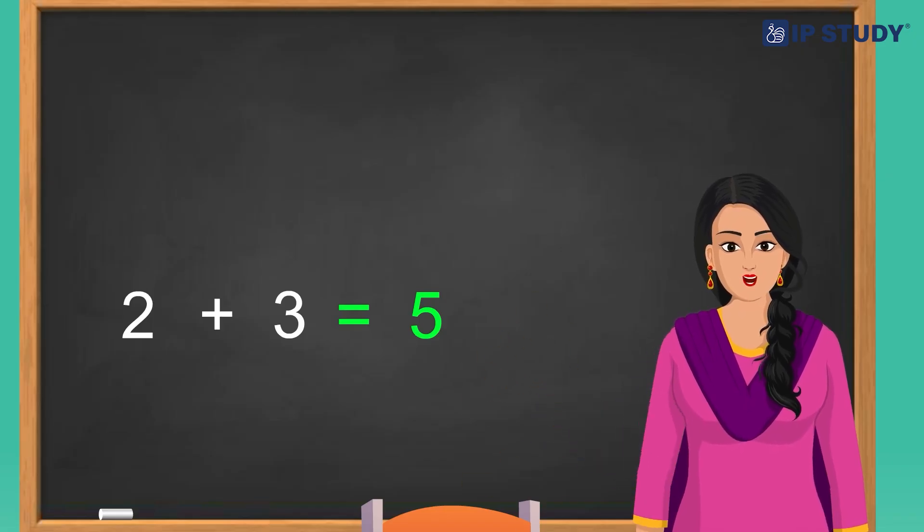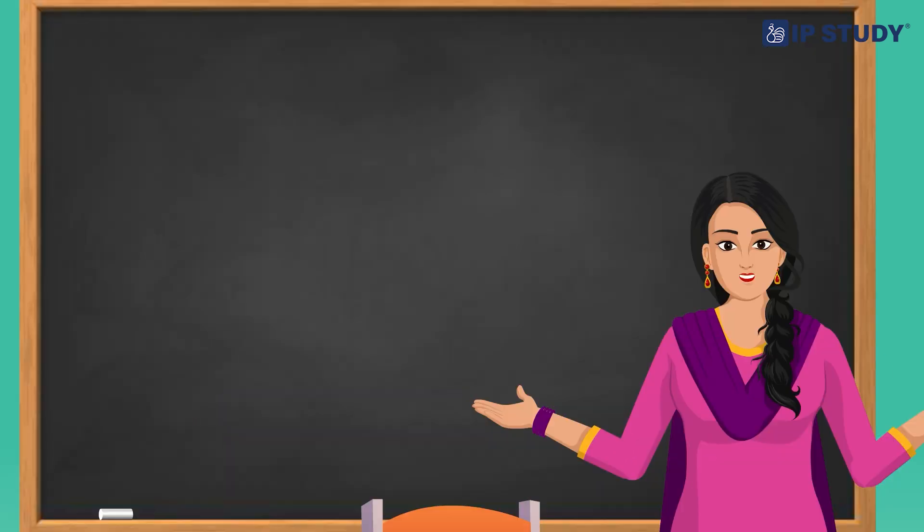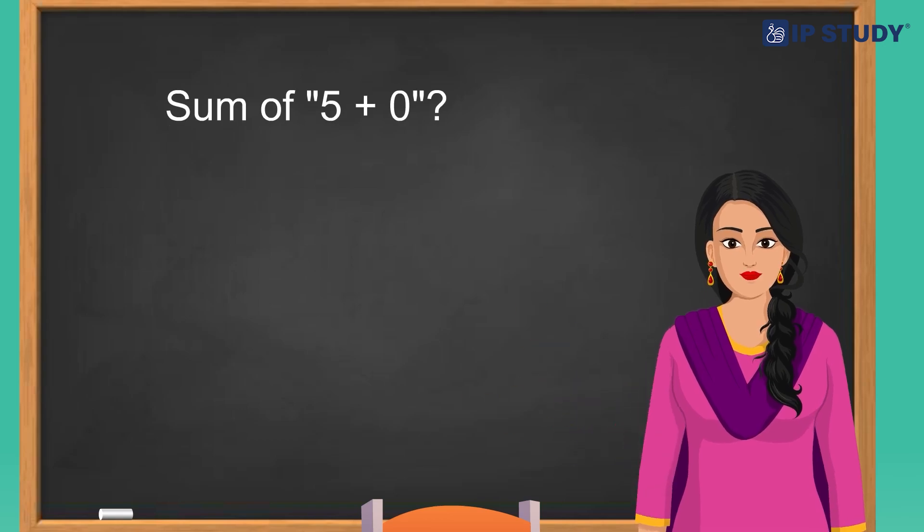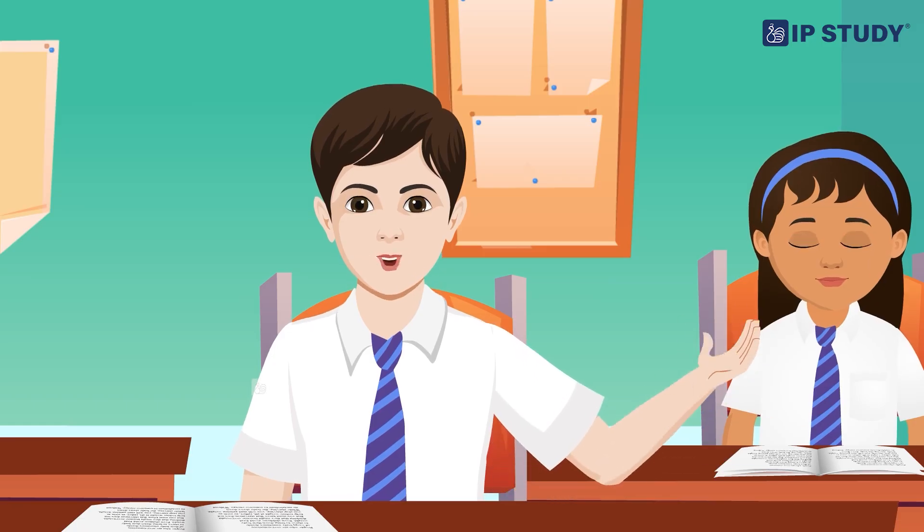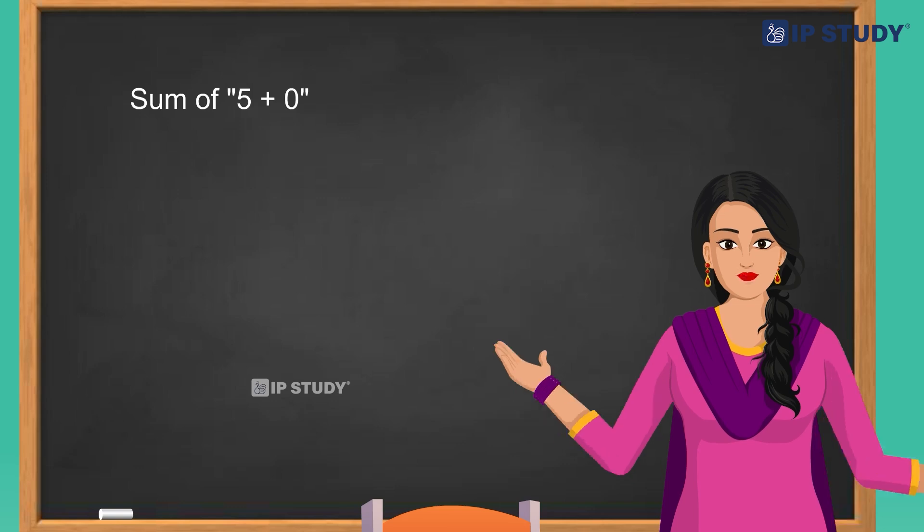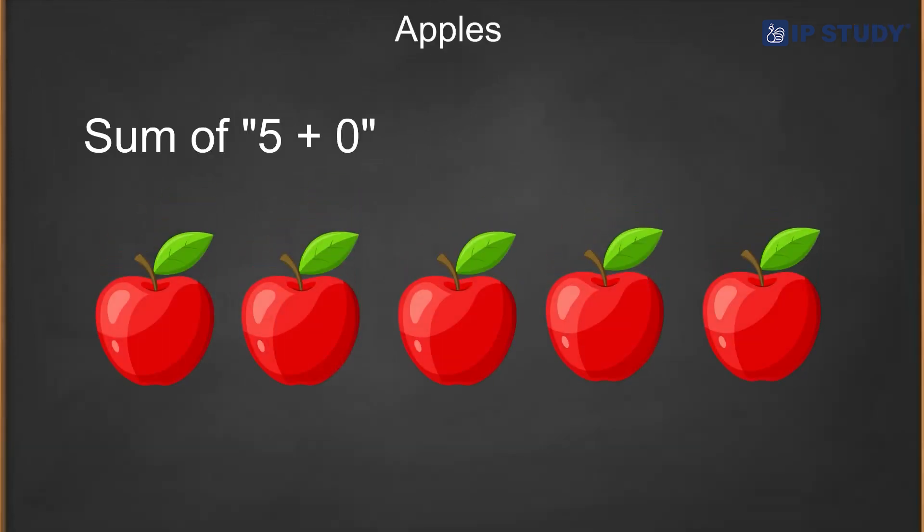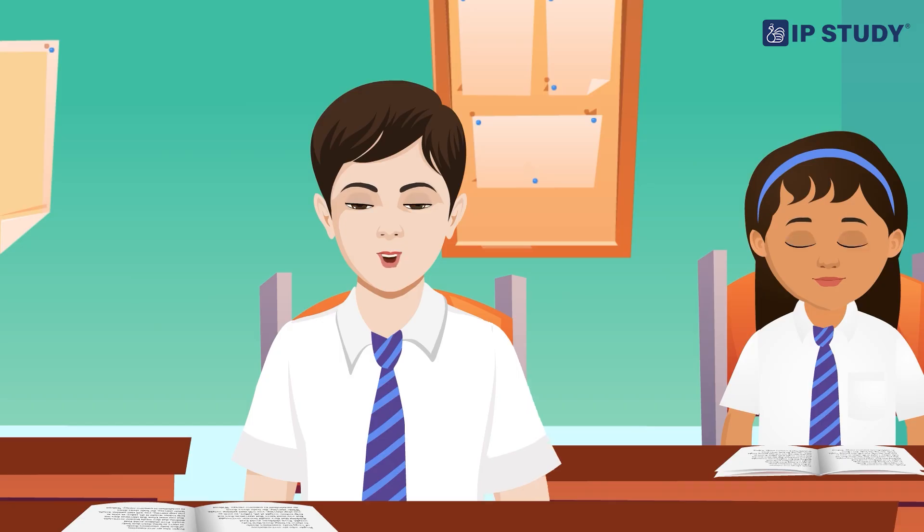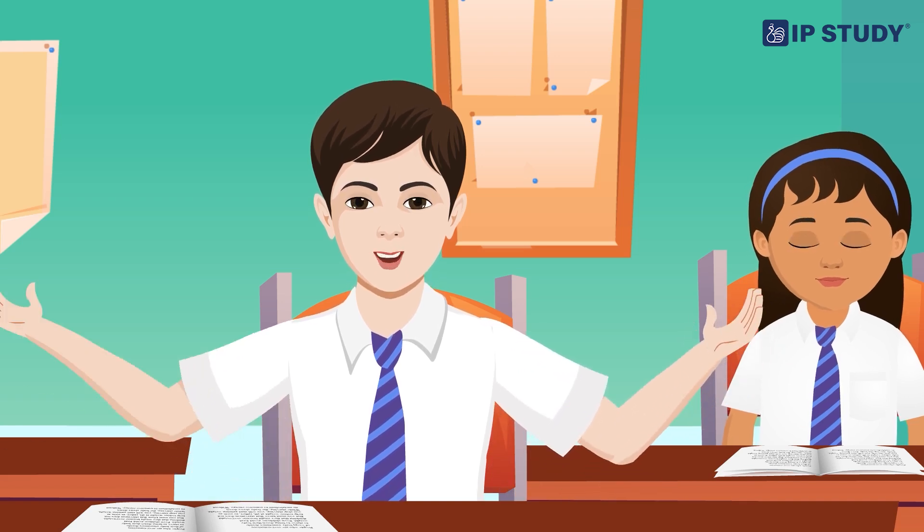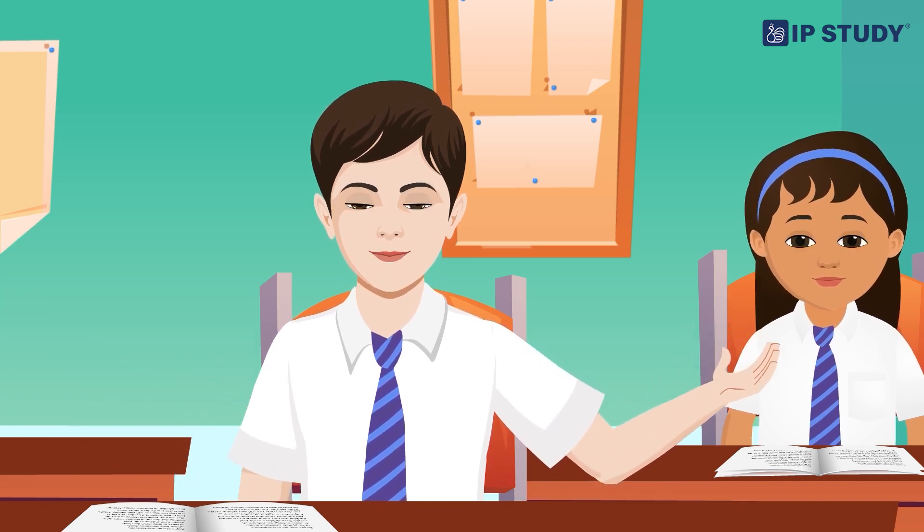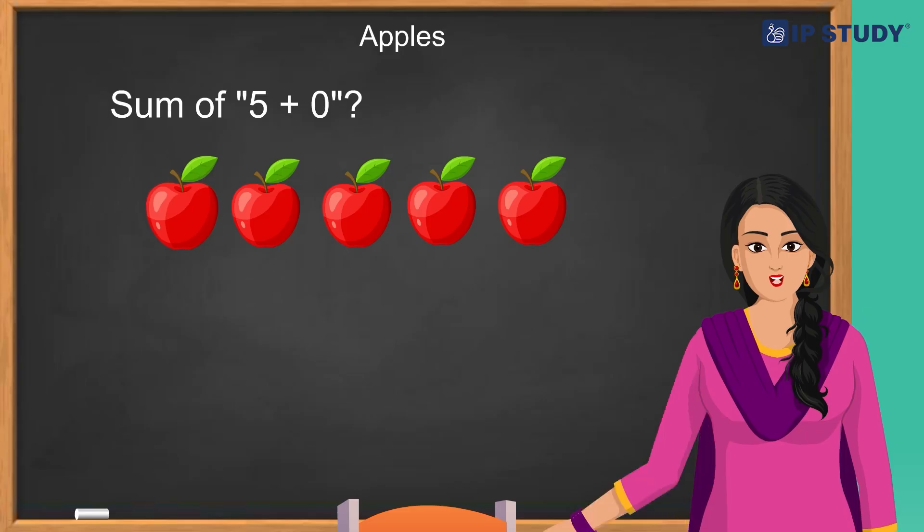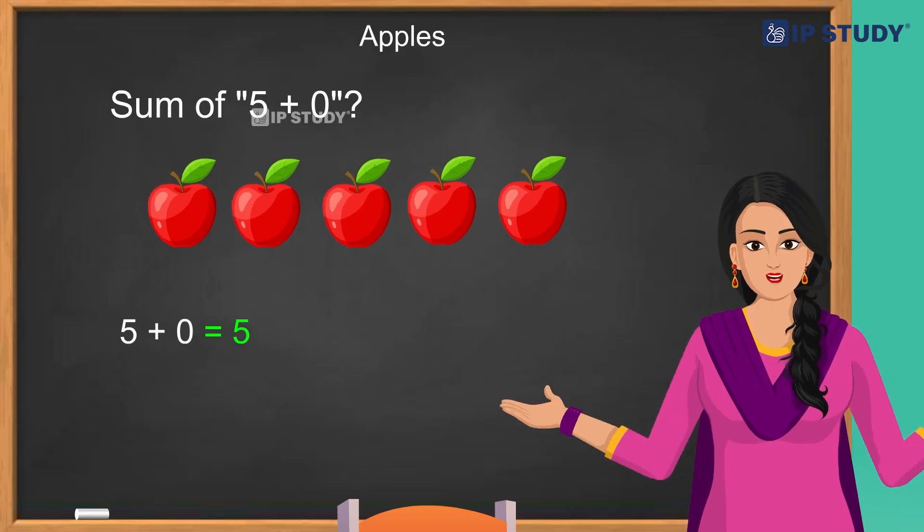Great job, Aman. I think you have understood it great. Now let's try another one. What is the sum of five plus zero? Hmm, I'm not sure. Let's think of it with pictures again. If you have five apples and no one gives you any more, how many apples do you have in total? Oh, I know this one. I have five and no more. I still have five apples. You are right, so five plus zero equals five. Let's write it down.